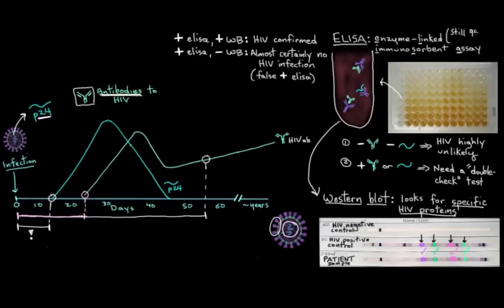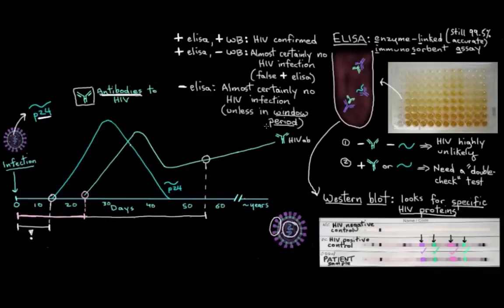But, for the most part, it's still about 99.5% accurate for HIV. And, of course, if your ELISA was negative, then again, really unlikely that you have HIV. Unless, of course, you were in the window period when you got tested. In which case, it'd be pretty important to get tested again after about three months or so, when your antibodies would have time to have developed.